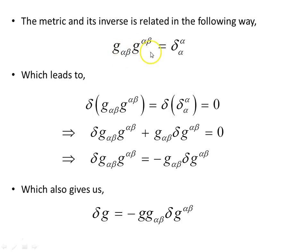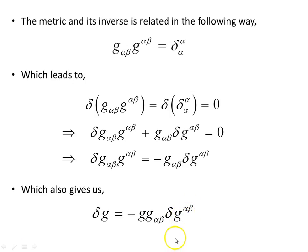The metric and its inverse together give the identity element — the Kronecker delta — which is just the unit matrix. If we now vary that, the right-hand side goes to zero, and the left-hand side by the product rule (Leibniz rule) gives: delta G alpha beta times its inverse plus the metric times the variation of the inverse metric equals zero. Taking one term to the right-hand side and making it negative: delta G equals minus G times G alpha beta contravariant times delta G inverse — the variation of the inverse metric. This gives a second relationship with a minus sign, in contrast to the plus sign when varying in terms of the covariant metric.